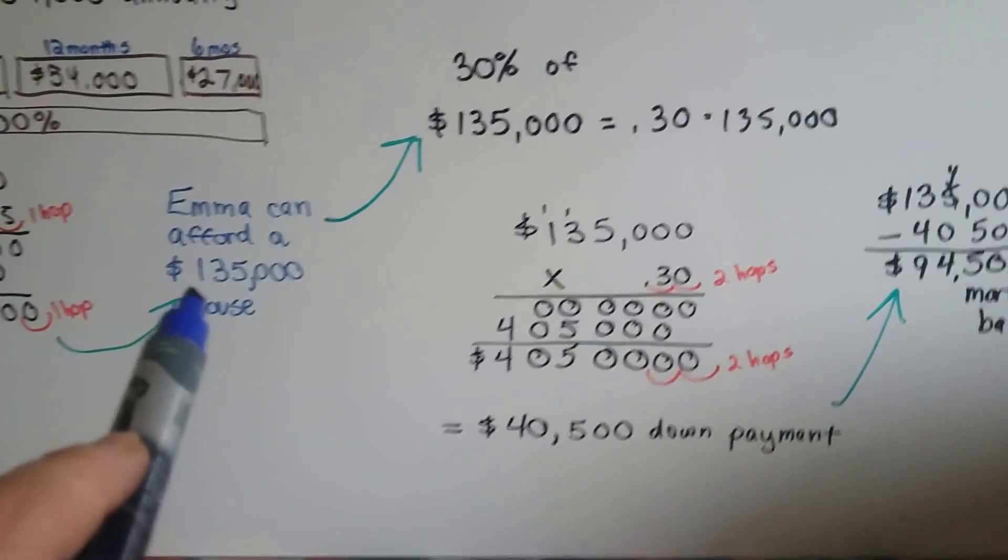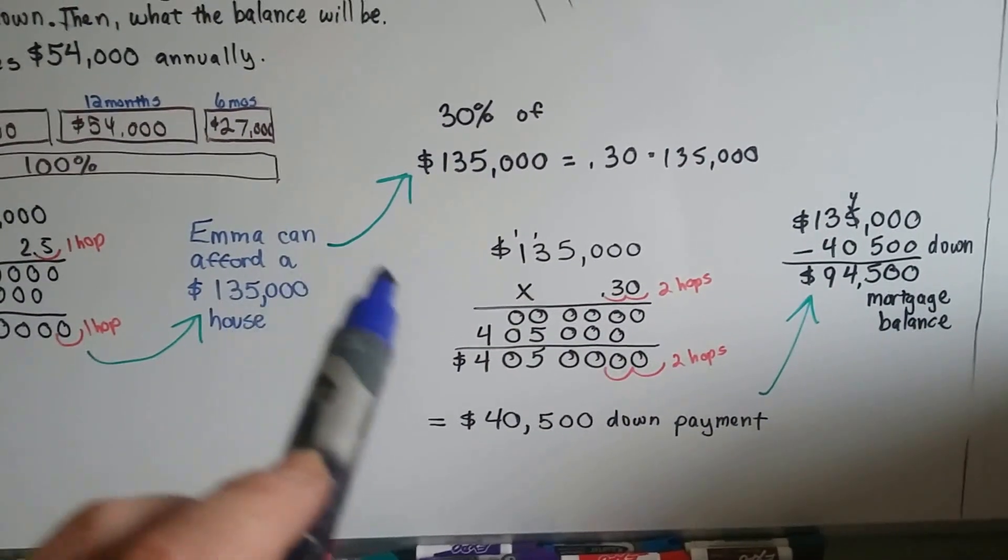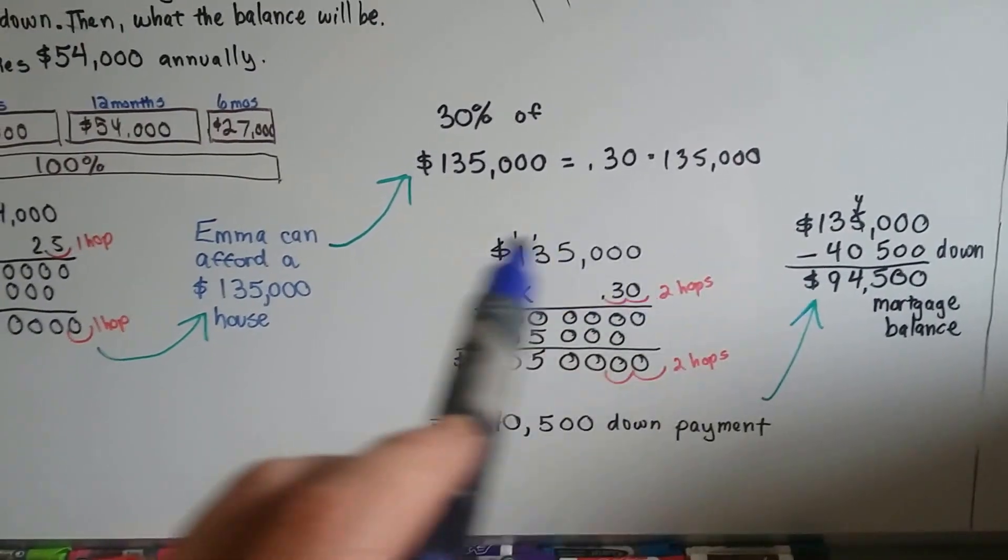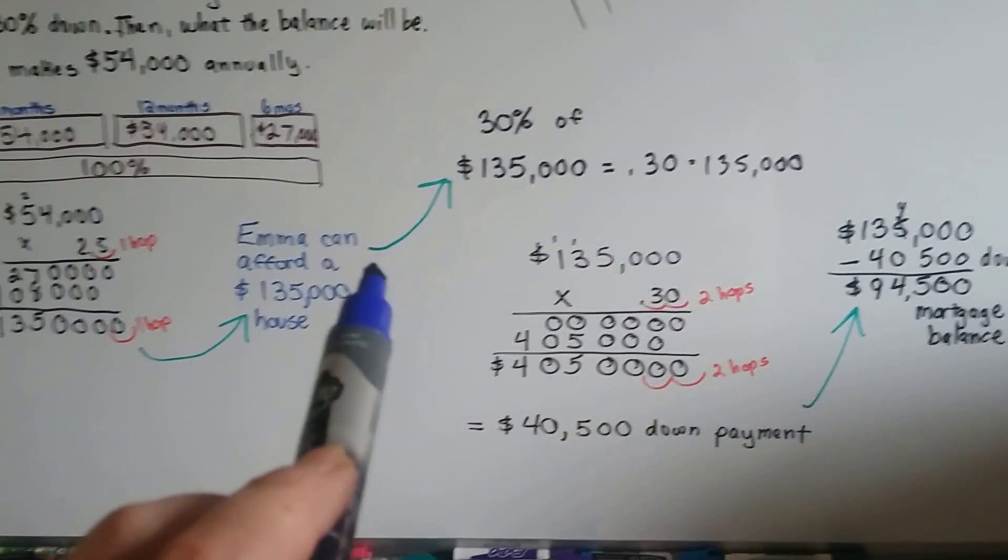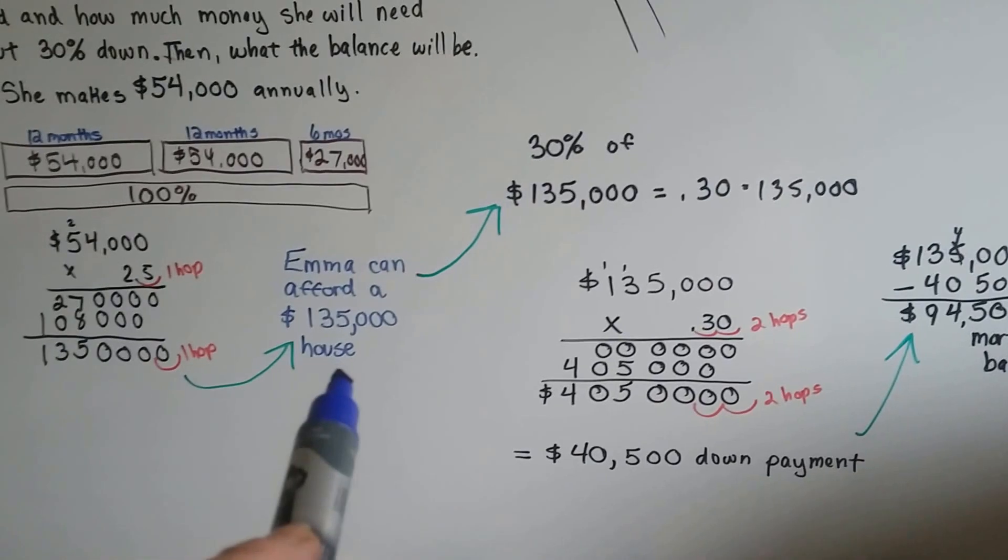Now, wouldn't it be a lot different if they said that she could afford 2.5 times her income after the down payment? So, that means she'd be able to afford even more. We'd have to work backwards to find that one, wouldn't we? If we took off the 30% and then figured out what 2.5 times was, we would have to work backwards.